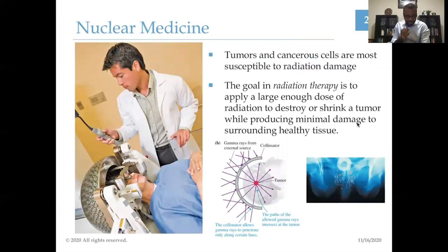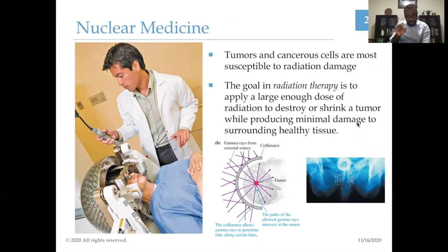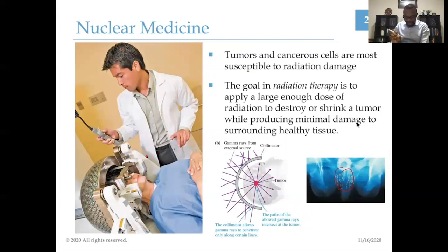In nuclear medicine, tumors and cancer cells are most susceptible to radiation damage. You can either shine a beam of radiation to a particular spot in the body to kill the tumor, or you can implant radiation seeds. For example, in a cancer of the scrotum, you implant radiation seeds and the emitted radiation kills the tumor from within.